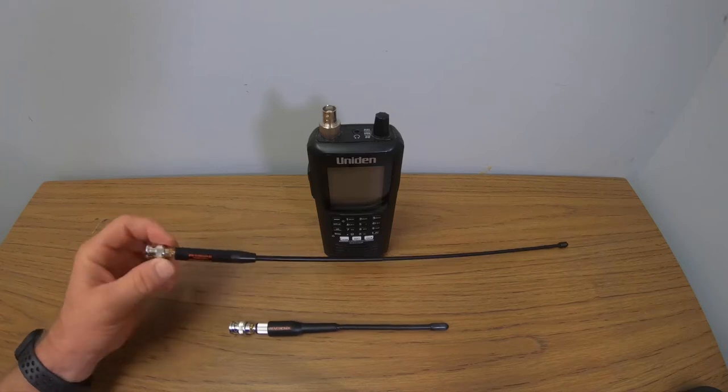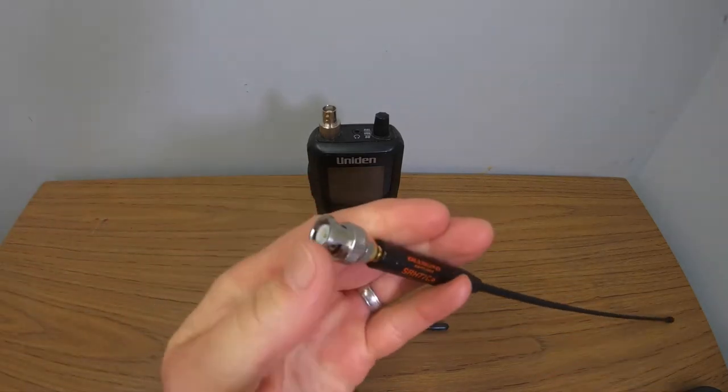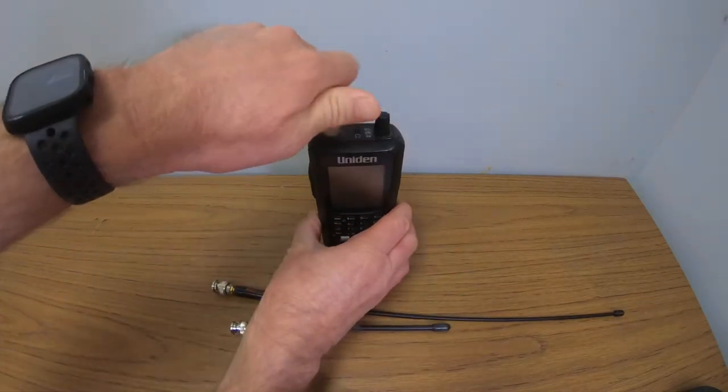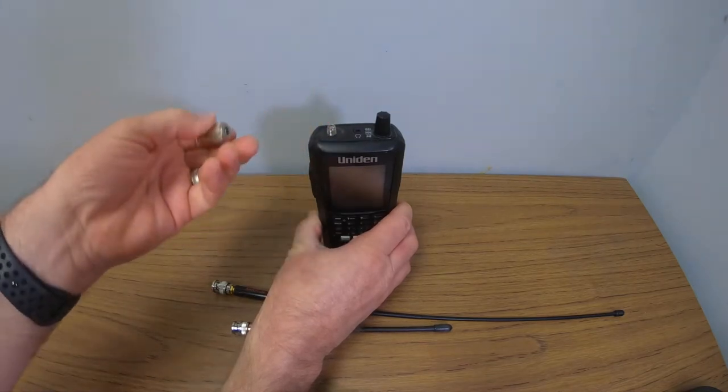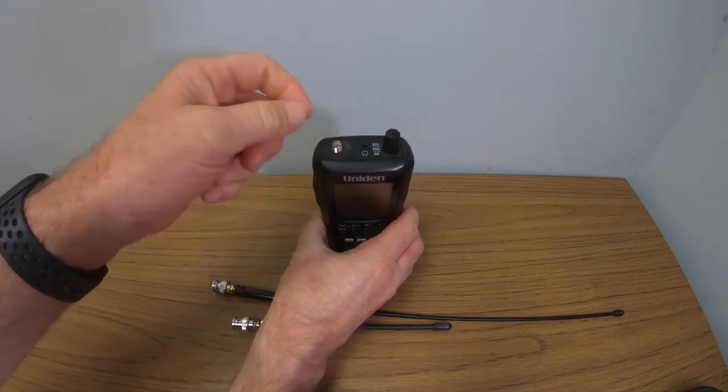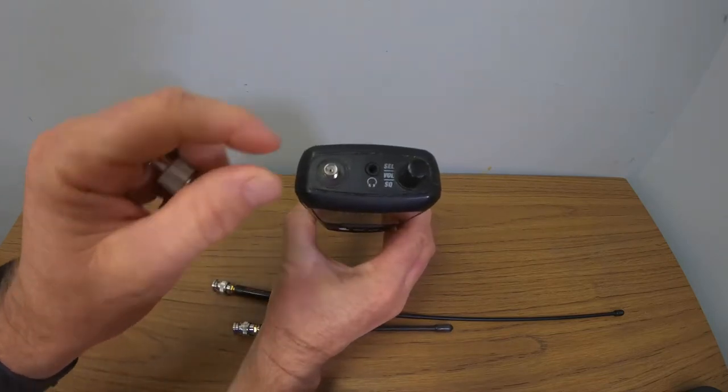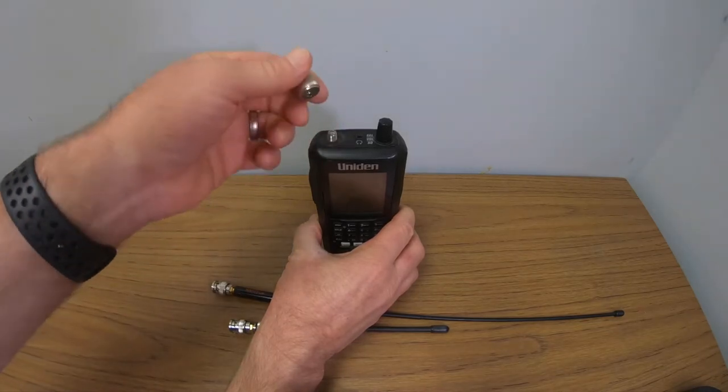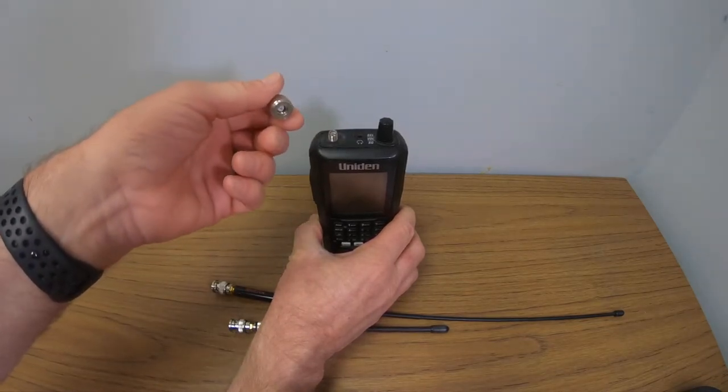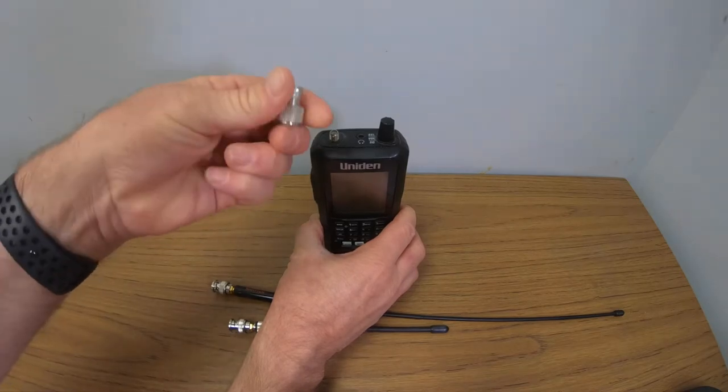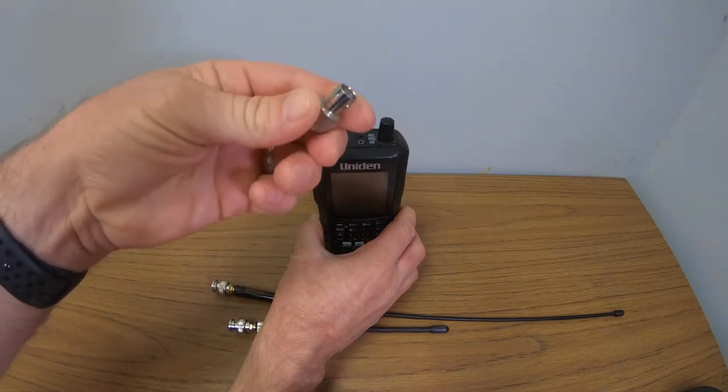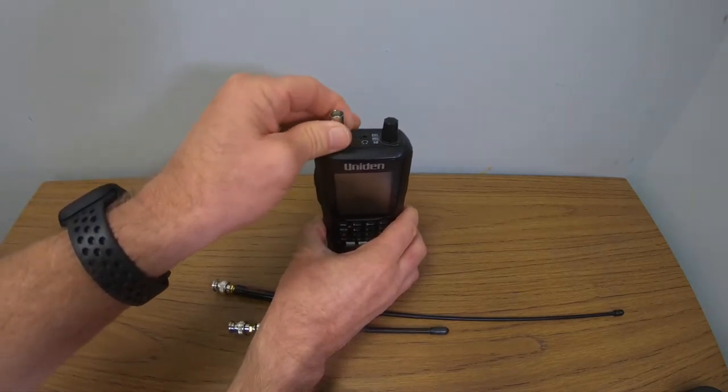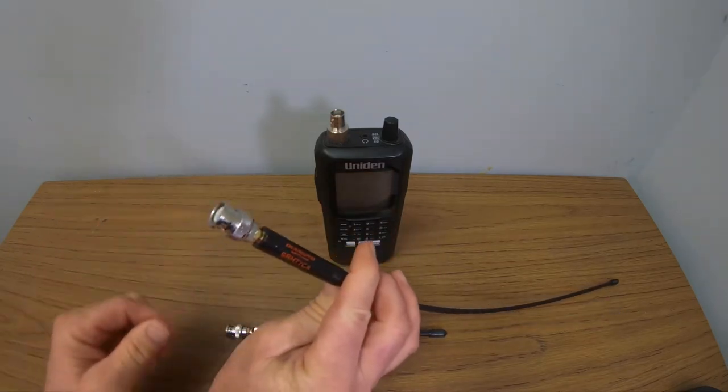For both of them, I have added BNC connectors which is this thing on the end here. When you buy the scanner, it doesn't come set up for this. It comes with a spin-on connector where you have to spin your antennas on and it's a headache when you're in the vehicle trying to spin on antennas. It takes forever to get them on and off and it's just a headache.